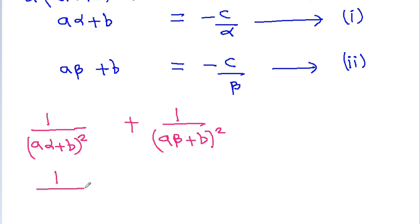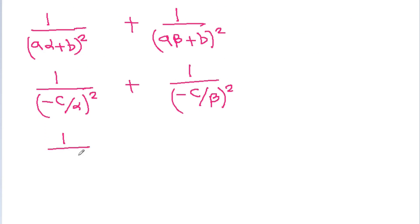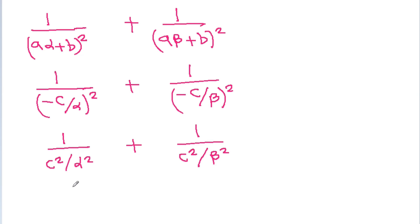Substituting from equations 1 and 2, aα + b = -c/α, so (aα + b)² = c²/α². Therefore the expression becomes α²/c² + β²/c².